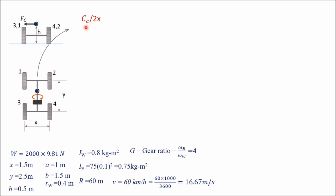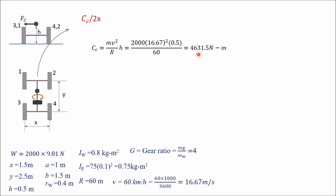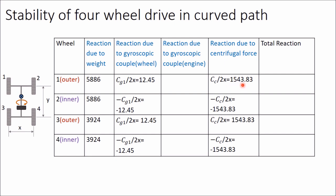Now calculating the centrifugal couple CC divided by 2x. The centrifugal couple equals m times v squared divided by R, multiplied by h. So CC equals 2000 into 16.67 squared into 0.5 divided by 60, giving 4631.5 Newton meter. CC divided by 2x equals 4631.5 divided by 2 into 1.5, giving 1543.83 Newton. This value is 1543.83 for all four wheels in the fourth column, but negative for the two inner wheels (two and four) and positive for the outer wheels.